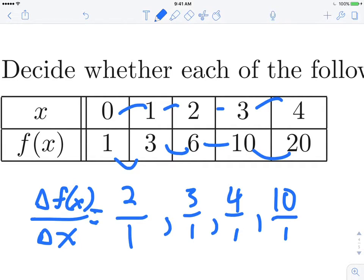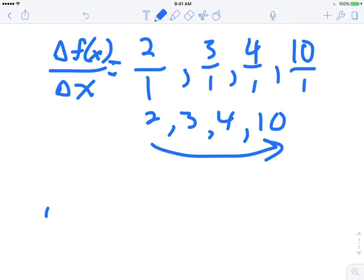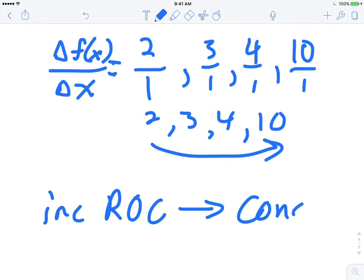Okay, if we look at all of those, this is 2, 3, 4, 10 are the successive rates of change, so that is increasing in value. Therefore, increasing rate of change means concave up.